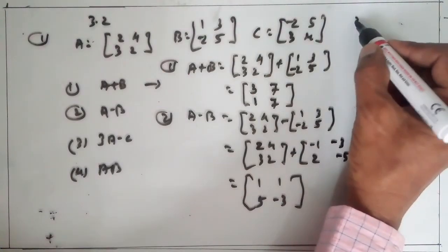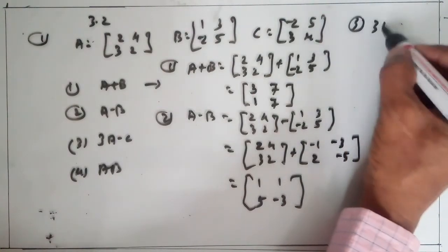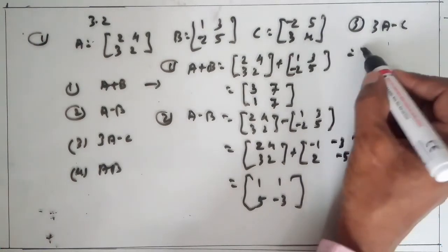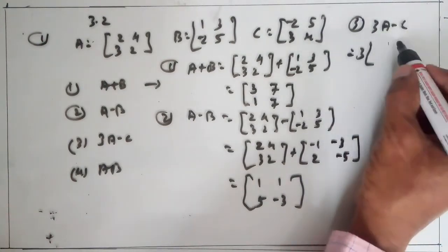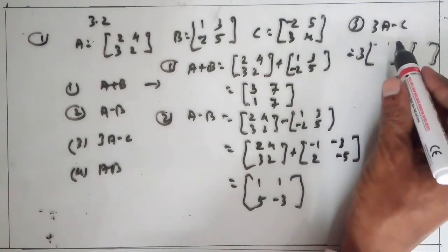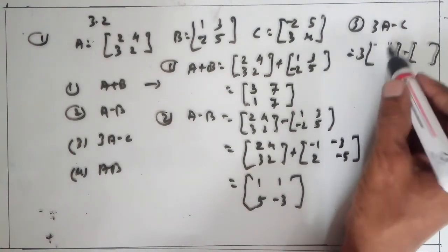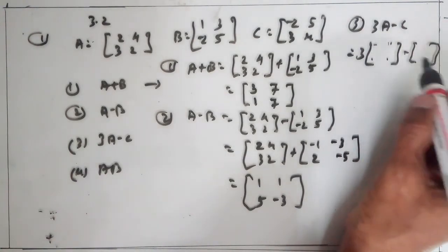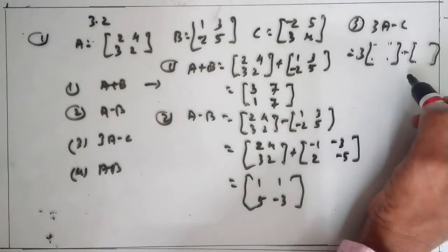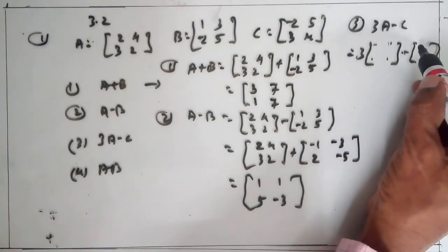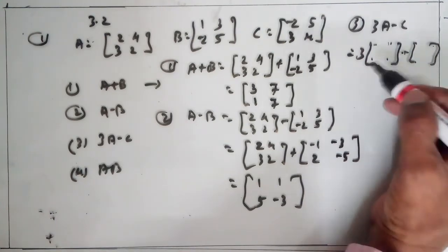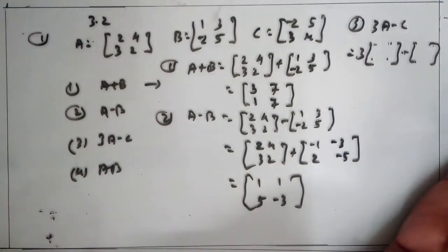Now for 3A minus C: 3 into matrix A minus C. Take 3 inside and multiply each entry of A by 3. Similarly, take the minus inside — here we get a plus sign — multiply each entry by minus 1, then take the addition.